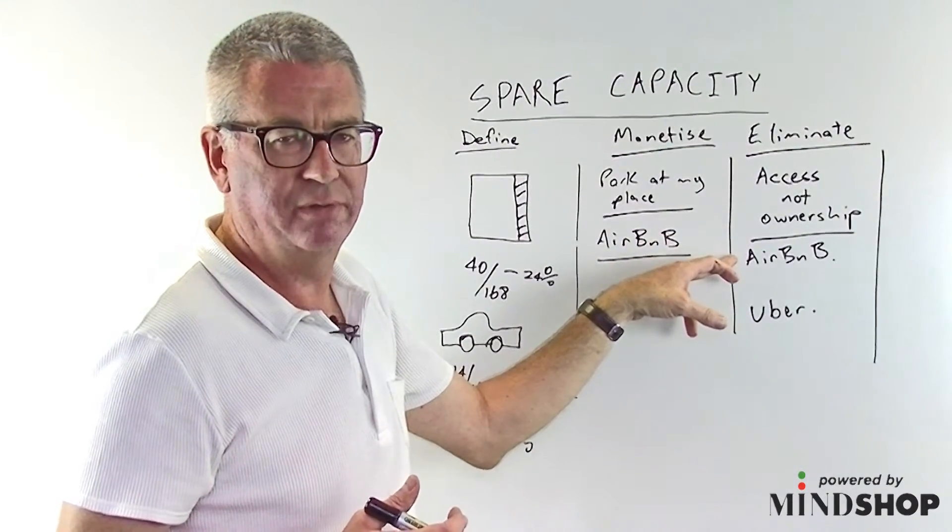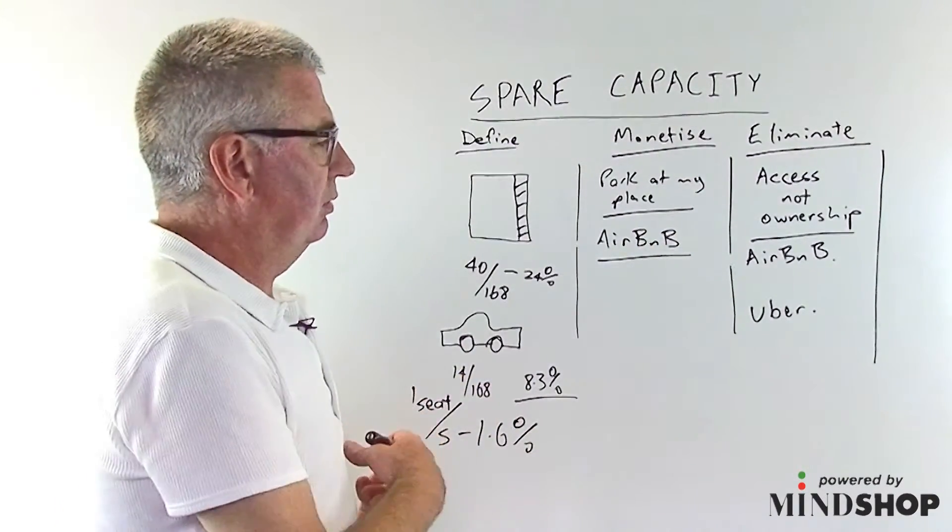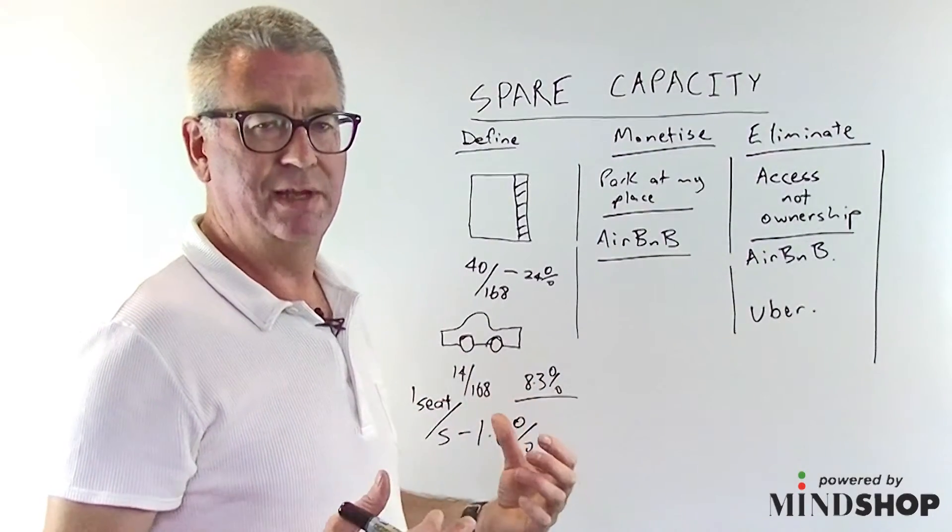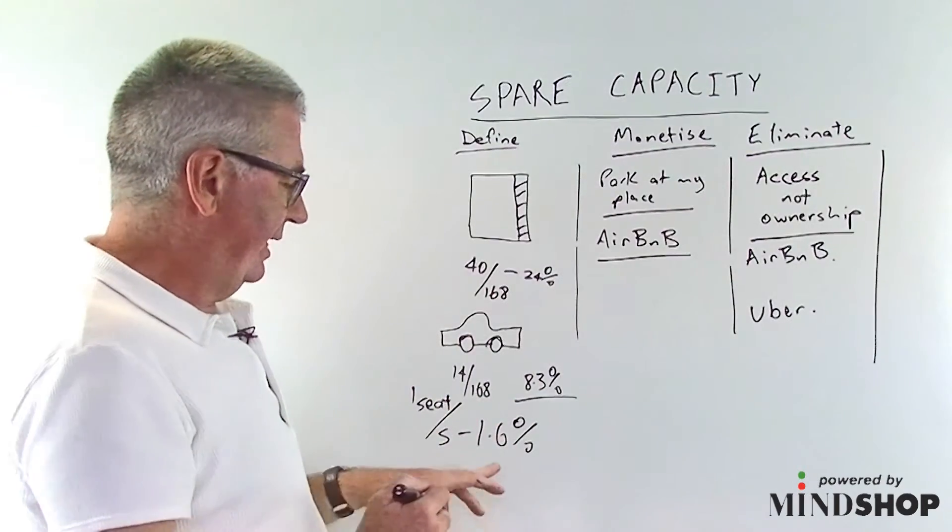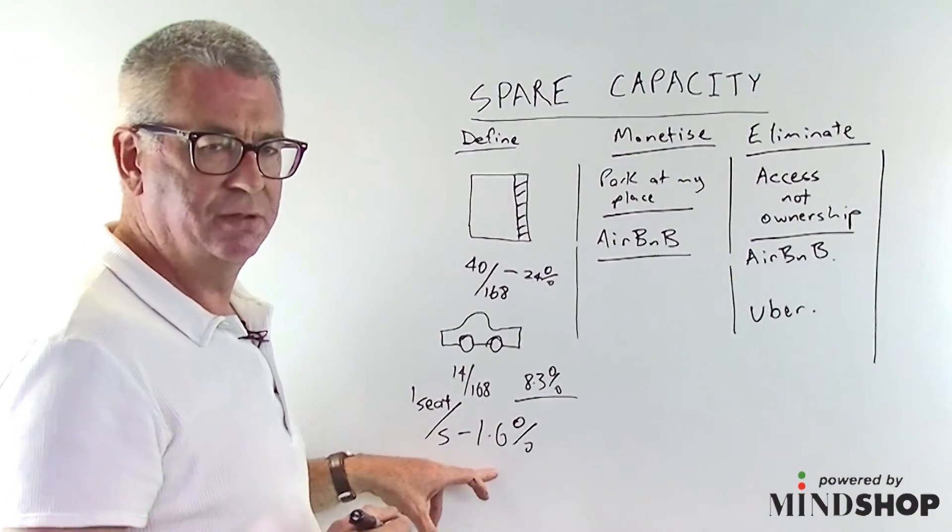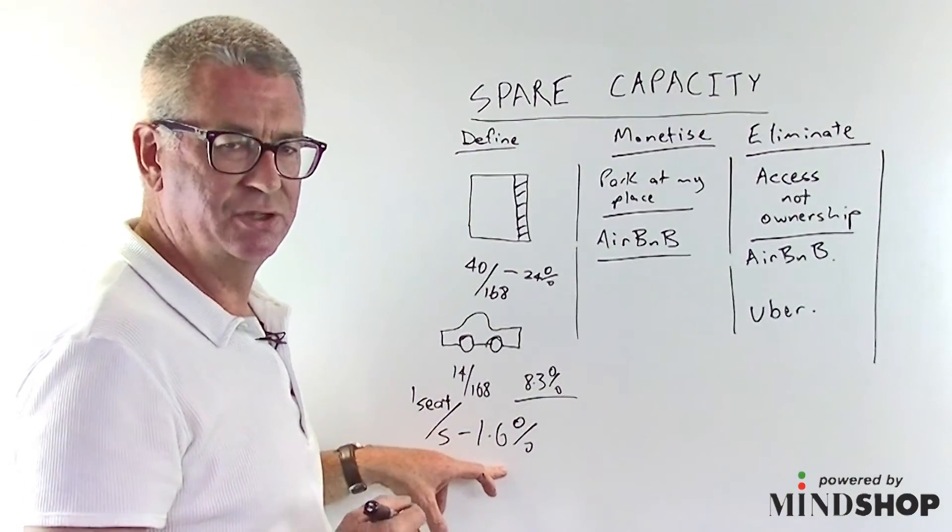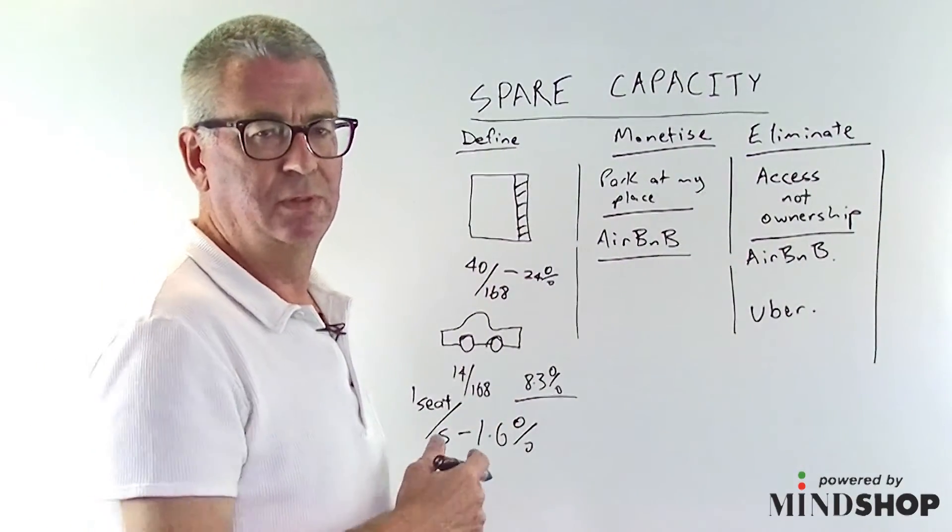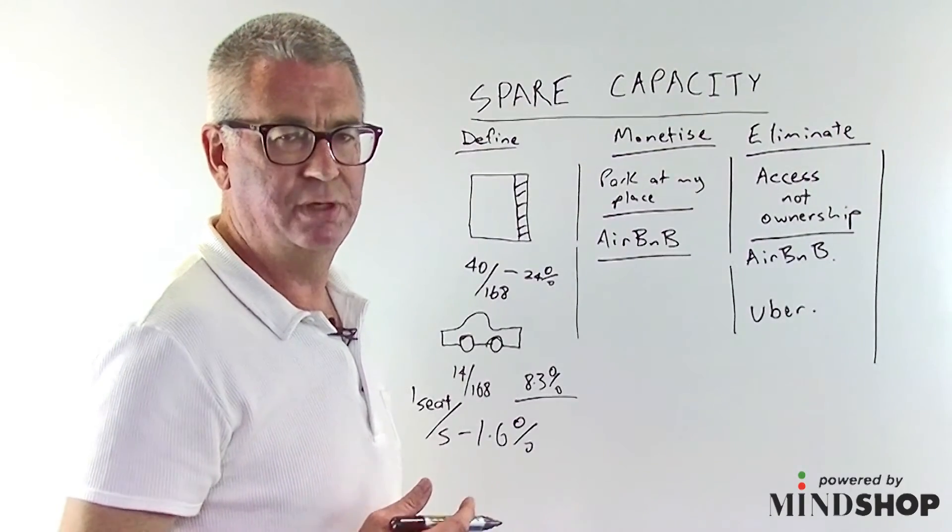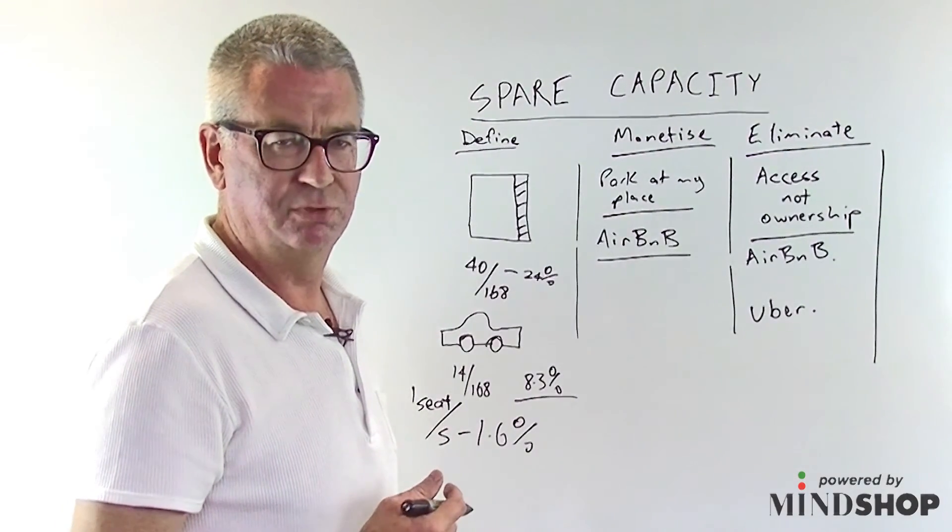So now that you start thinking about spare capacity, you're going to see it everywhere. And you can start to get the sense when utilization of valuable assets is so poor, why this is creating a big opportunity for disruption and why it's creating a big opportunity for new business models. Good luck.